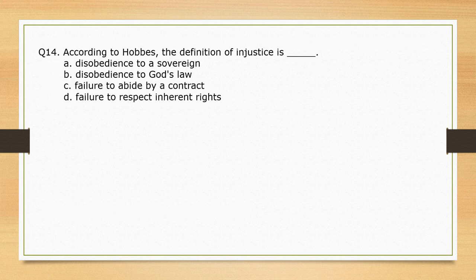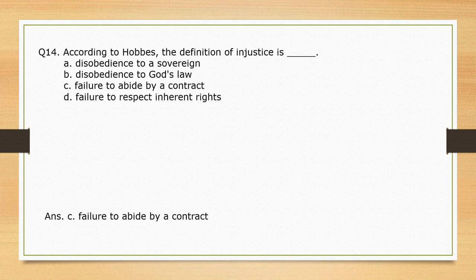According to Hobbes, what is the definition of injustice? Options are given. The correct option is option C: failure to abide by a contract.